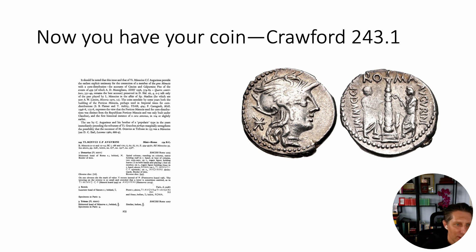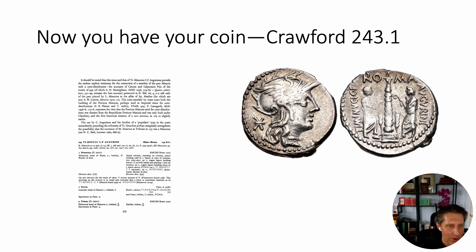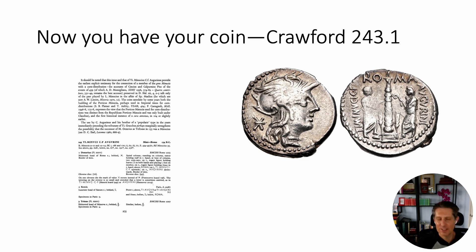Now you have it. You go to Crawford number 243, and what you see is that Augurinus issued a number of different coins — a denarius, a semis (a bronze coin), and a triens (also a bronze coin). This is a denarius, and it matches our coin: a helmeted head of Roma facing right, behind it the X symbol indicating value, and then a description of the column, two people next to it, the statue atop the column, and then Roma and T.I. Minucius C.F. upwards and Augurini downwards with a border of dots. That's our coin.